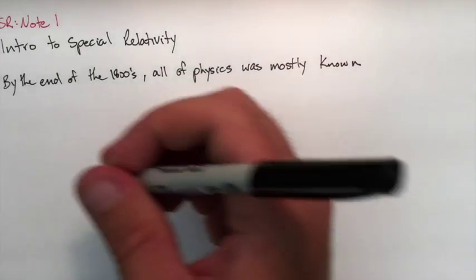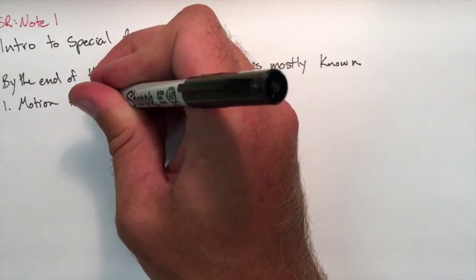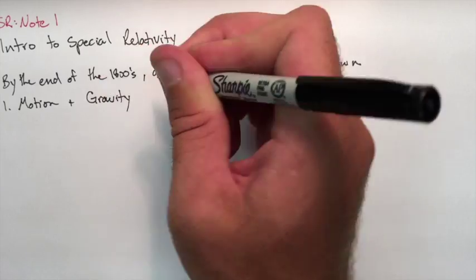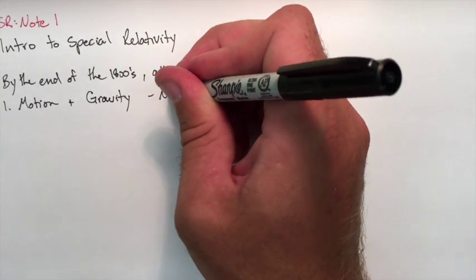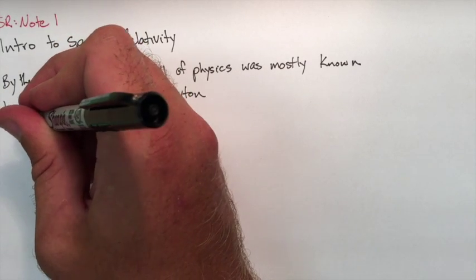Number two, electromagnetism. Electricity and magnetism was unified from Maxwell in the middle of the 1800s, and that was a lot to do with the stuff that Faraday found out before that.